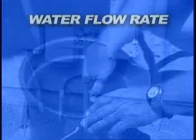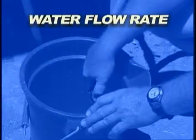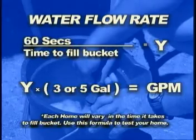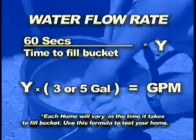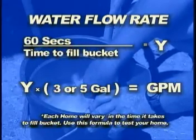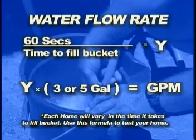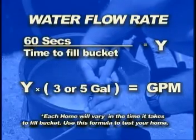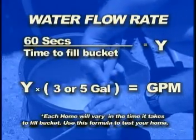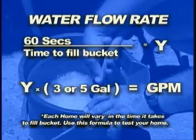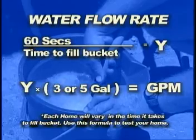Turn your tap wide open and record the time it takes to fill the bucket. Divide those seconds into 60 seconds, then multiply this number times the number of gallons in your bucket. This gives you an approximate water flow rate in gallons per minute exiting the hose bib.